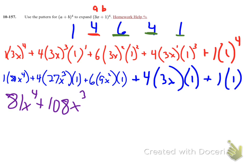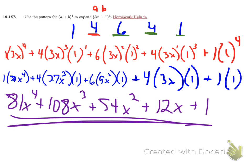And then my next term, in between the next set of pluses, I have 6 times 9 times 1 - that is 54x squared. My next term, in between the next set of pluses, is 12x. And my last term is 1. And that is the 4th degree polynomial that you get from expanding 3x plus 1 to the 4th.